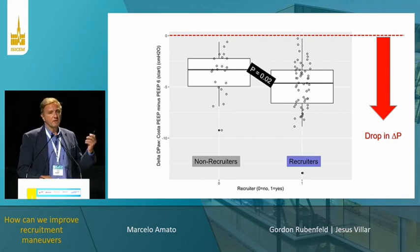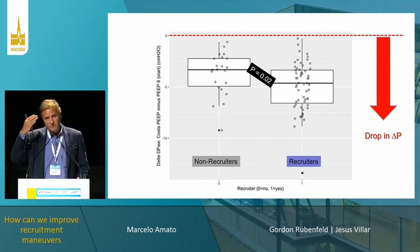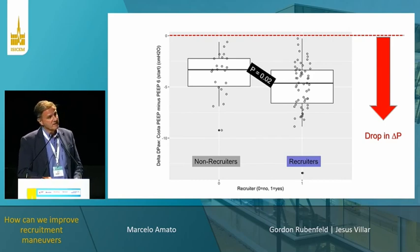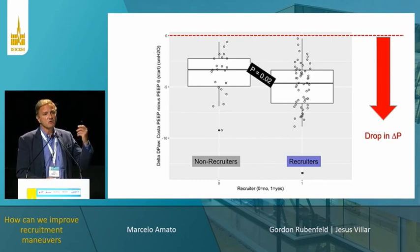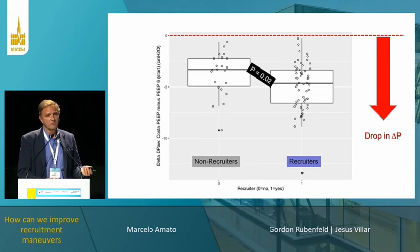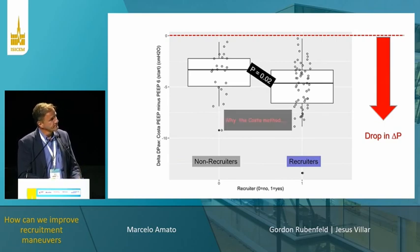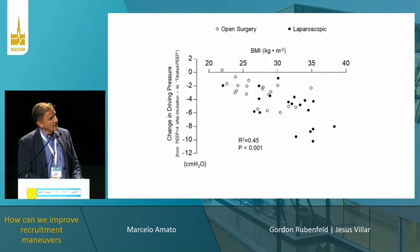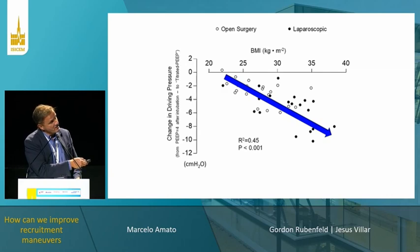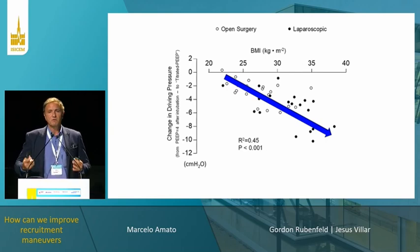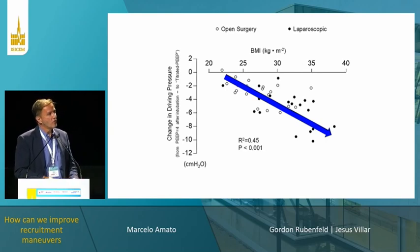In the ART trial, one-third of patients had increased driving pressure after the maneuver — we did very poorly. We need better technology. With the Costa method, if BMI increases, you can reduce driving pressure further. These maneuvers are especially helpful for obese patients with high body mass index.